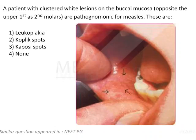A patient with clustered white lesions on the buccal mucosa opposite the first and second molars are pathognomonic for measles. You get all the information required for this question from these three words only: pathognomonic for measles.